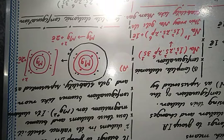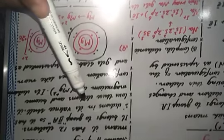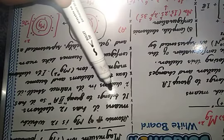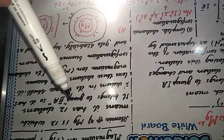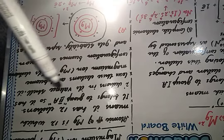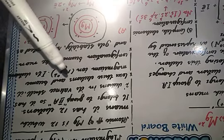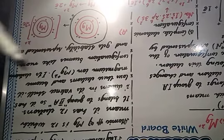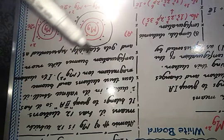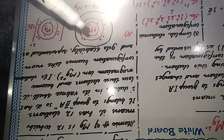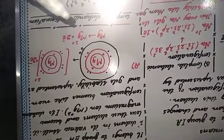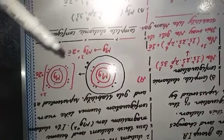Now the second element — magnesium. The atomic number of magnesium is 12, which means it has 12 electrons. It belongs to group 2A, meaning it has two electrons in its outermost valence shell. Magnesium loses these two electrons to form the magnesium ion, and its electronic configuration becomes like neon, gaining stability.